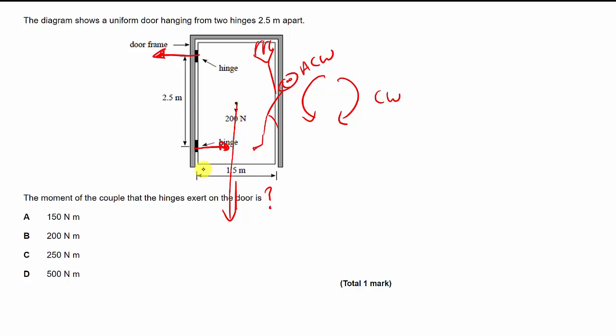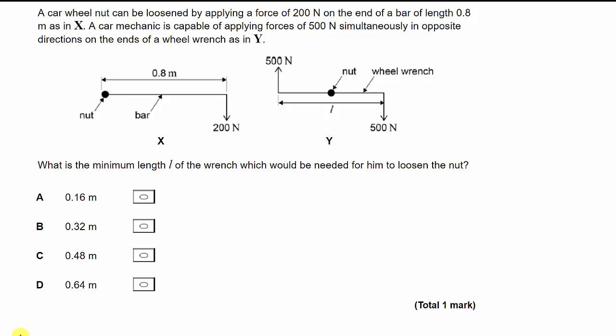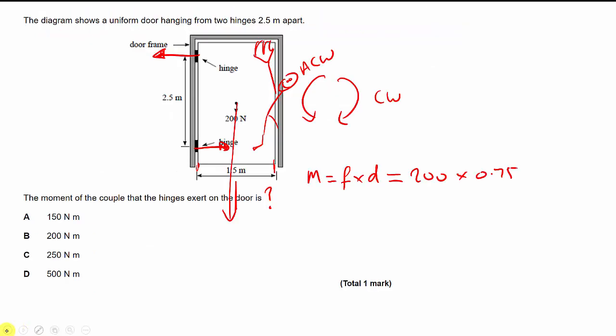The center of mass of the door is here, which is directly above this. This is 1.5 meters, so it's half of that. So the moment should be equal to just force times distance. And since this moment of the weight is going to be the same as the couple provided by the hinges, then I can just calculate the moment of the weight to find the magnitude of the couple provided by the hinges. So that's 200 times 0.75, which comes out as 150 Newton meters, which is A.